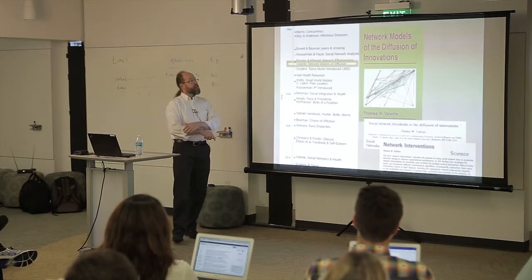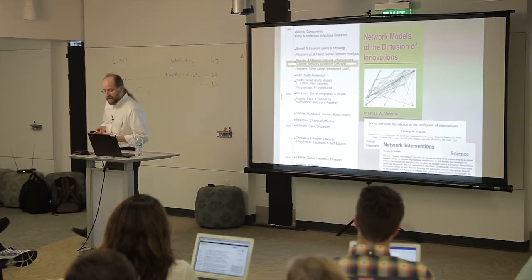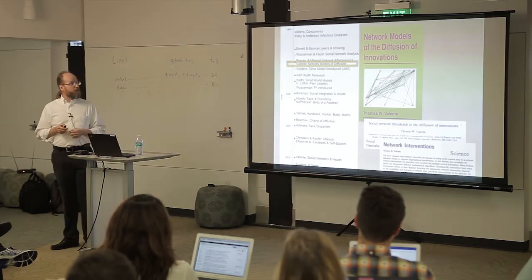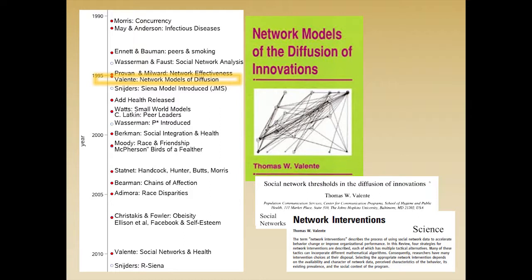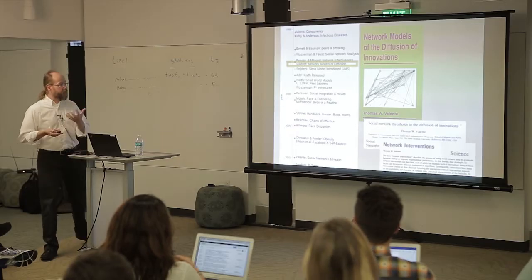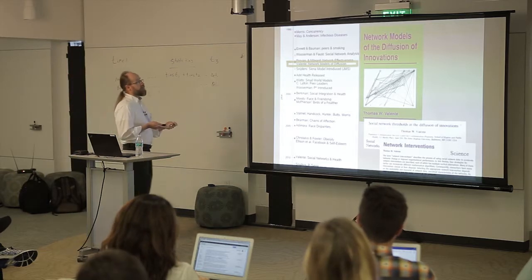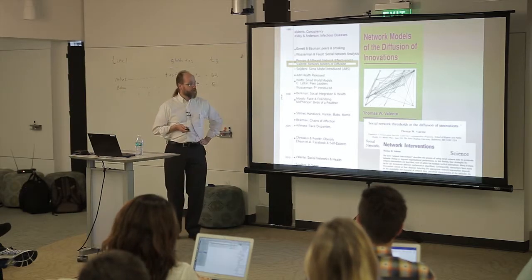Then about this time, the floodgates open — I'm really just picking the highlights. Tom Valente's 'Network Models of Diffusion' is the modern answer to Rogers' 'Diffusion of Innovations.' He puts a discrete network model on top of it, and this has become the guiding work for doing social interventions in networks and health ever since. Tom has become one of the largest champions in the modern era thinking about how we actually get in the field and help people intervene with respect to networks and health.